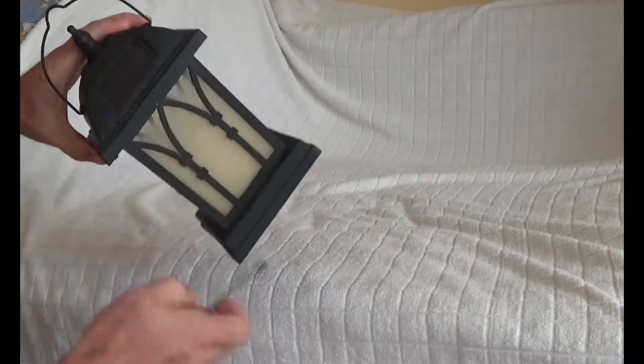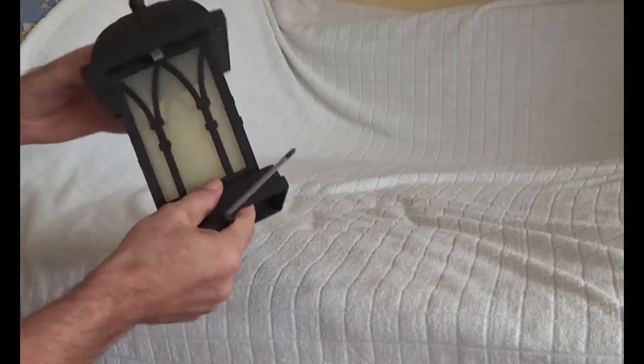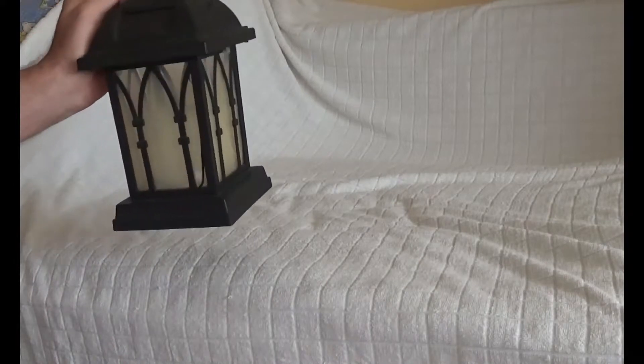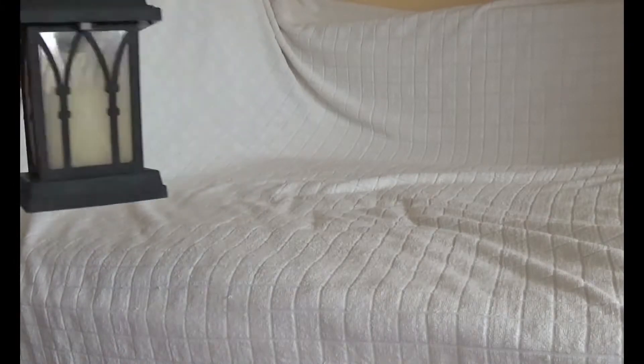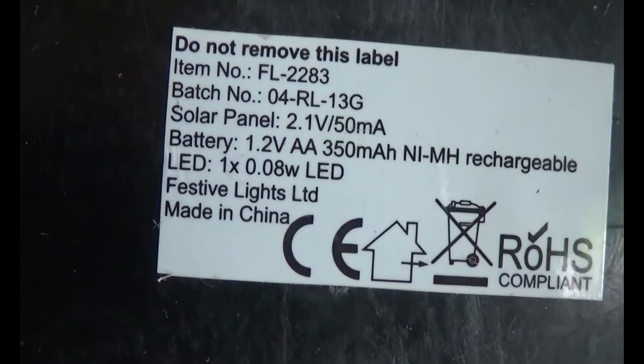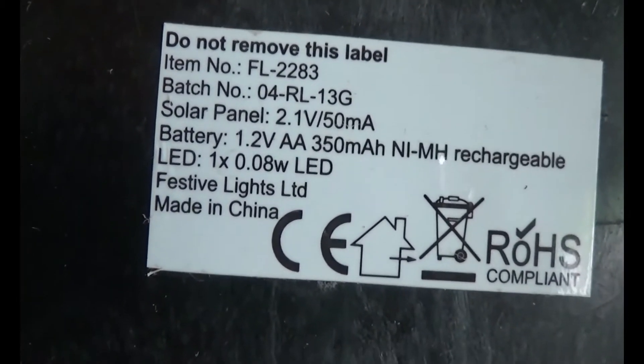We can see two solar panels. They are used to charge the battery during the day. The battery stores the energy needed during the dark. Just look at the specification label and get acquainted with the technical characteristics of the solar panels, battery, and LED bulb.